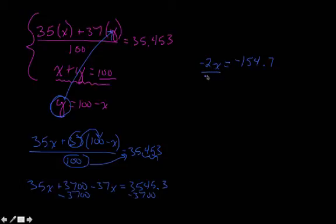Last step then, we're going to divide both sides by negative 2. That's going to cause this term to cancel out. We'll end up with x over here, and x is going to be equal to 77.35%.